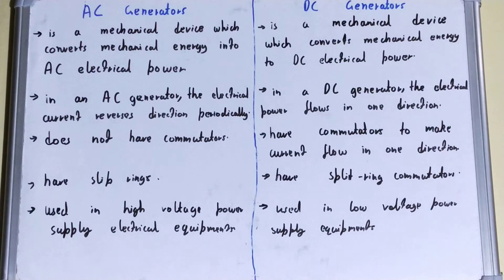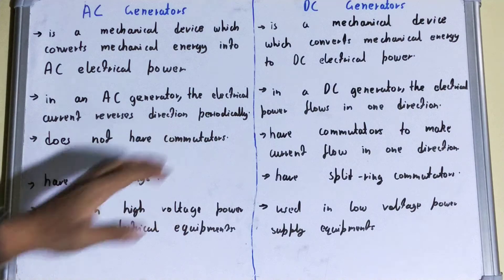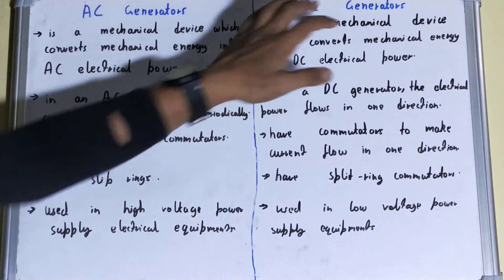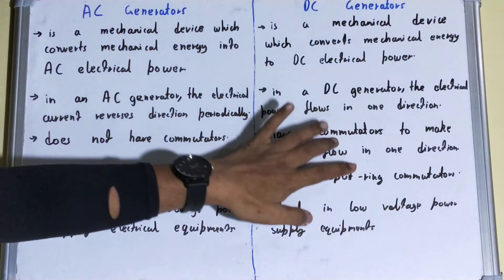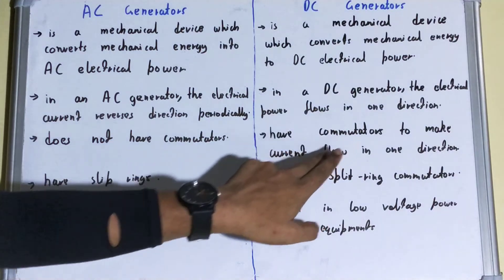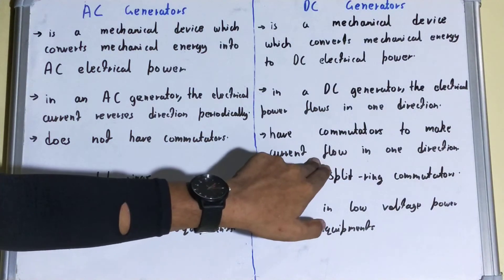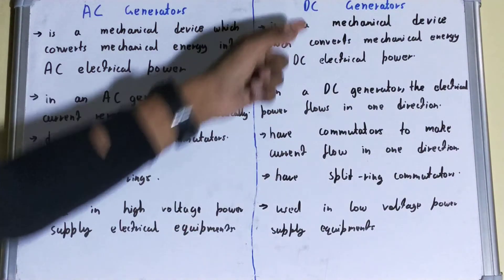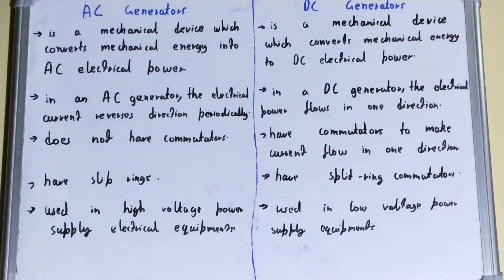Regarding commutators: an AC generator doesn't have commutators because it only produces AC current and not DC current. But in the case of a DC generator, it has commutators to make the current flow in one direction, in order to obtain DC current.